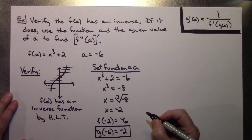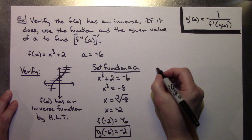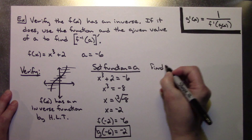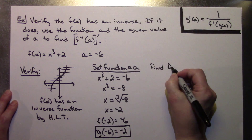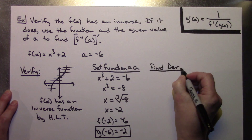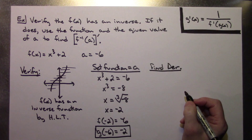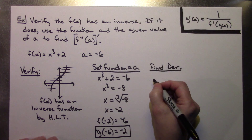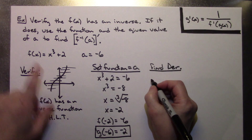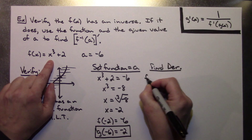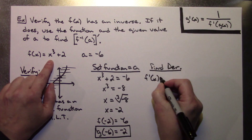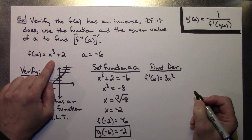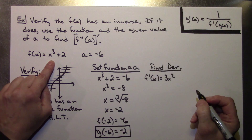Basically, for your next step you are going to want to find your derivative. On this one, the derivative is going to be relatively quick. That's my original function, so f prime of x equals 3x squared.